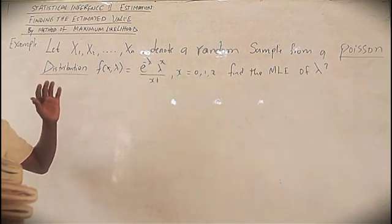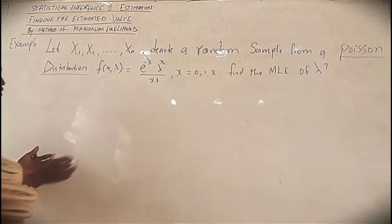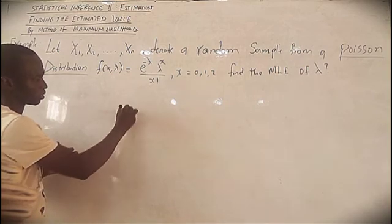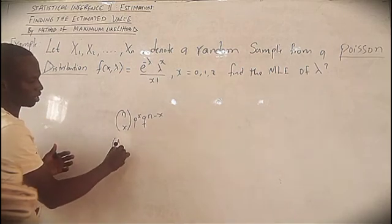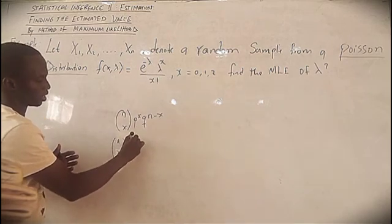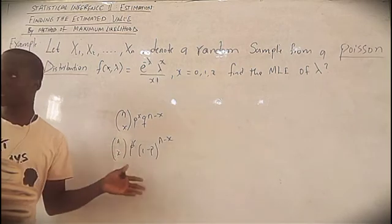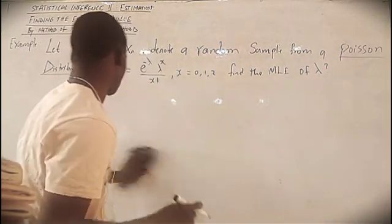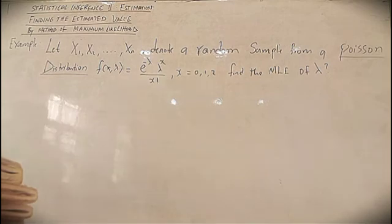In case you were given, let's say, a binomial distribution, you know that if it is a binomial distribution you have the binomial PMF: C(n,x) · p^x · (1-p)^(n-x). So if it is binomial, you use that form. Now, we are dealing with a Poisson distribution.